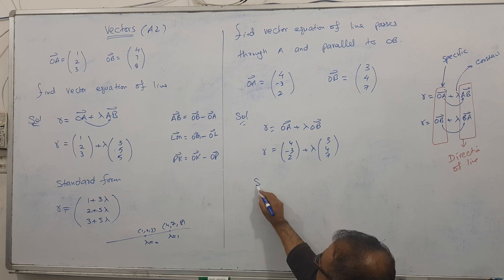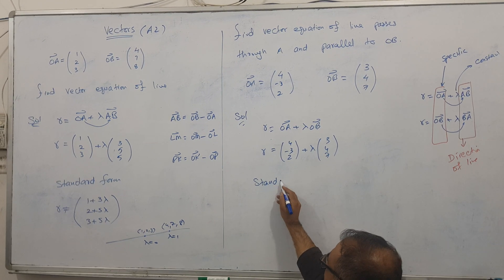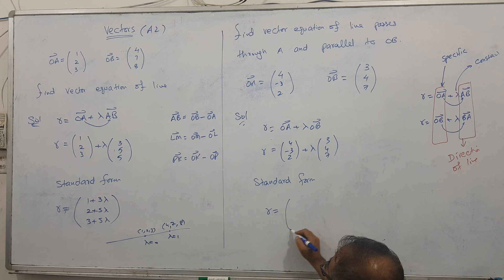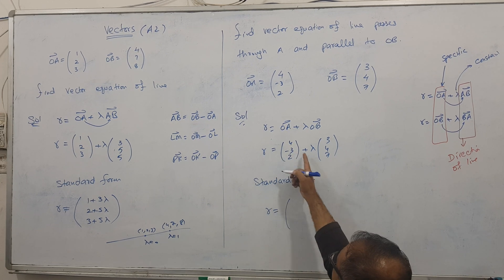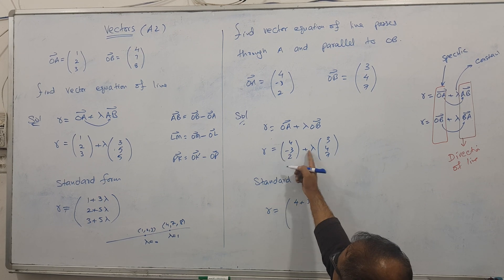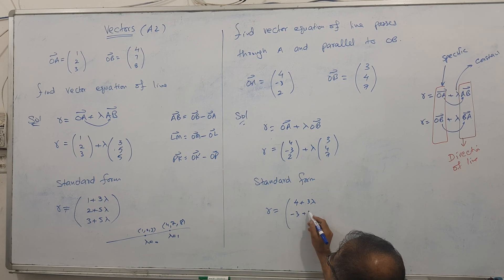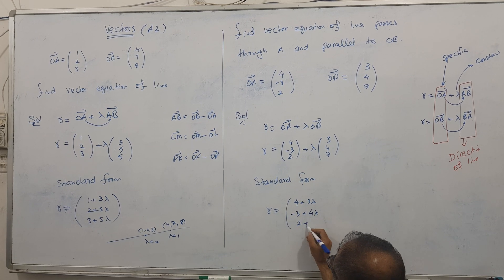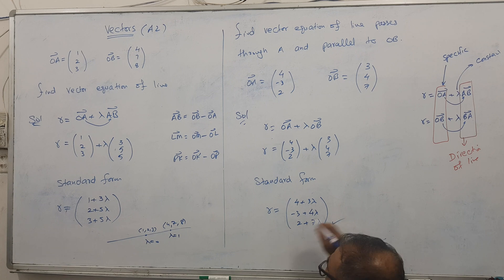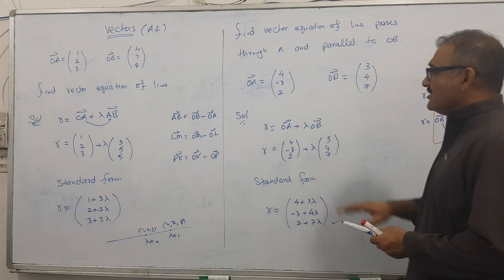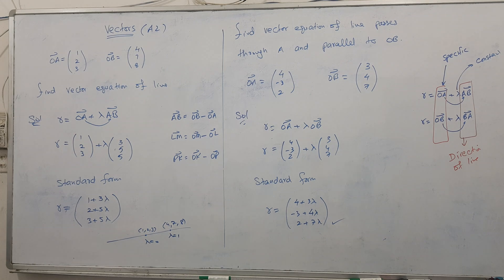If asked to convert to standard form: 4 + 3λ for the i component, −3 + 4λ for the j component, and 2 + 7λ for the k component. This is the standard form of the line equation.